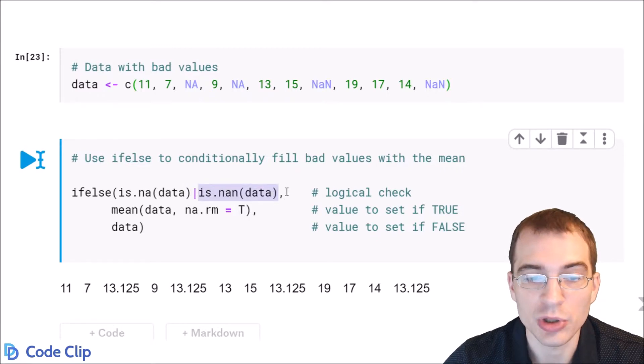So that will return true for all of these missing or bad values. And then the next thing you pass in is what to do if that check was true. So in this case, when it's true, we want to fill them with something. We'll just fill them with the mean value. So we're going to pass the mean of the data. We also have to remove the NAs for that.